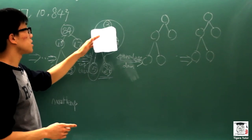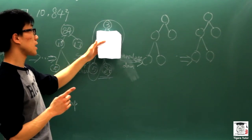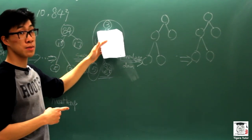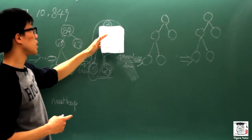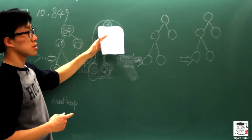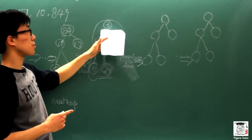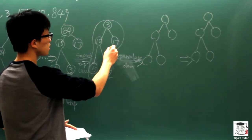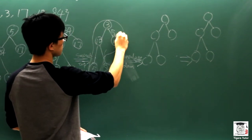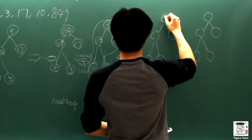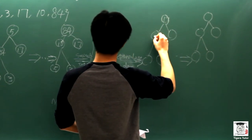And the only element violating the max heap's characteristic is the top element. So we percolate down the top element to a correct location. So here, we switch 3 with 17. Then we can have the heap like this.